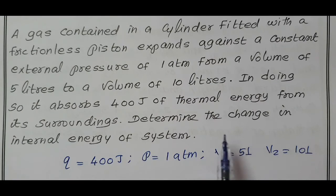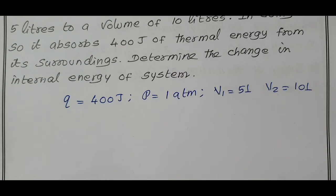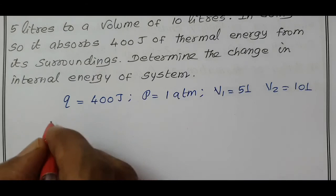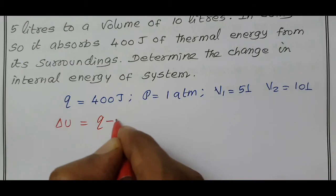We have to calculate delta U, internal energy, change in internal energy. From the first law, we know delta U, internal energy change, is equal to Q minus W.